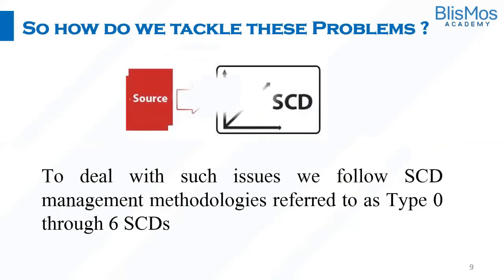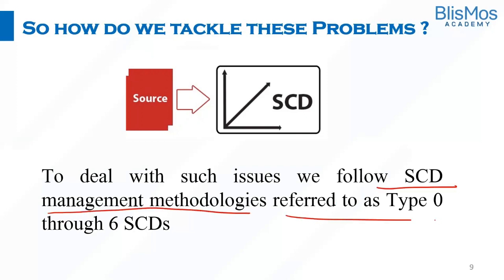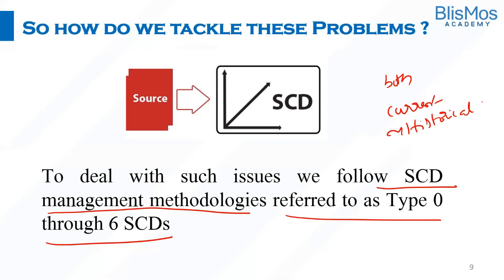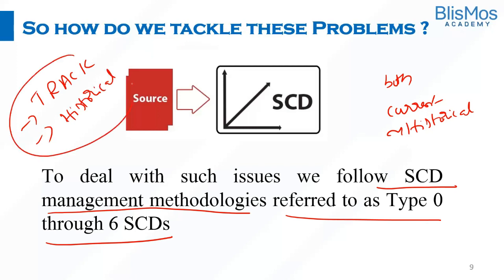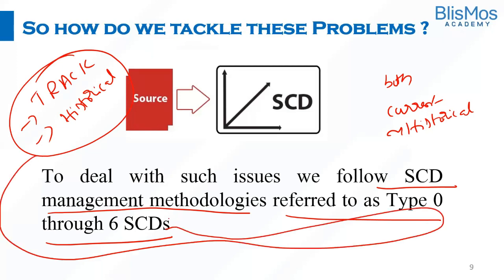So how do we tackle this problem? To deal with such problems, we follow SCD management methodologies referred to as Type 0 through Type 6 SCDs. With SCD, we store and manage both current and historical data over a period of time. Whenever you are building the data warehouse, you have to have due consideration about the SCD. It is one of the critical ETL tasks in tracking the history of the dimension record. SCD helps us to track the changes in dimension values and also helps us to report historical data at any point of time.